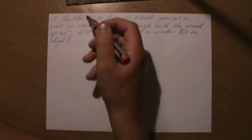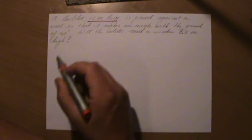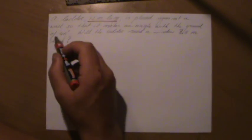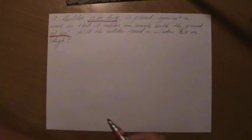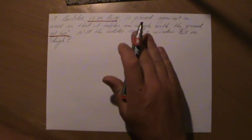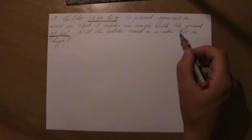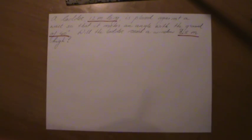And it makes an angle of 40 degrees with the ground. So the ladder, 12 meters long, makes an angle of 40 degrees with the ground. Will it reach a window in that wall which is 8.5 meters high?